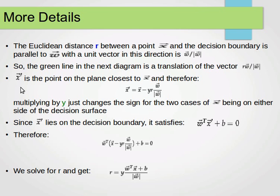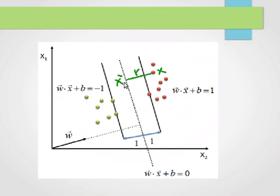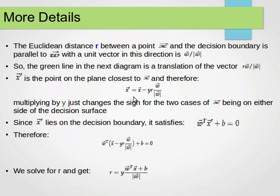Now x-bar is the point on the plane closest to x. We can find the value of that point by: x' equals x minus y·r times w over the magnitude of w — that's the unit vector.